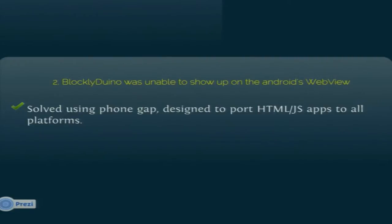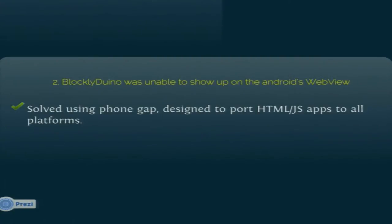The next issue was that Blockly-Duno was unable to show up on the Android WebView — when we tried, it was not displaying. After trying many things, we finally used PhoneGap. PhoneGap is a library to port HTML and JavaScript code onto any platform. We used PhoneGap, which is an open-source tool, for porting HTML code onto Android, and it rendered Blockly-Duno quite fine.